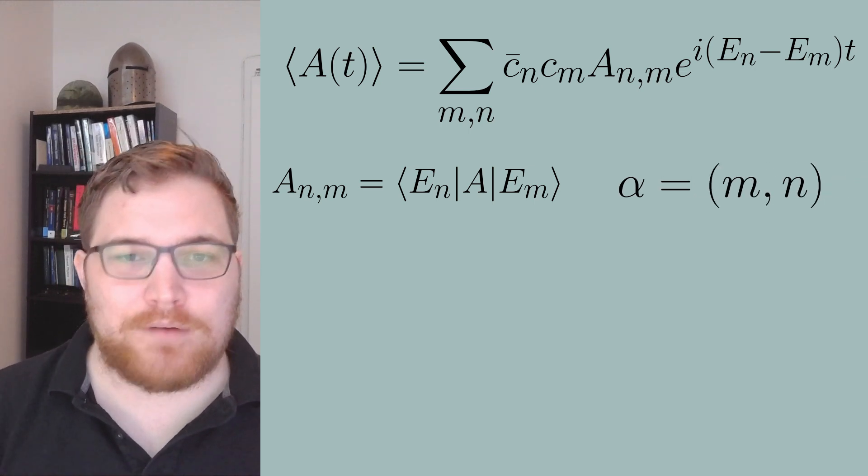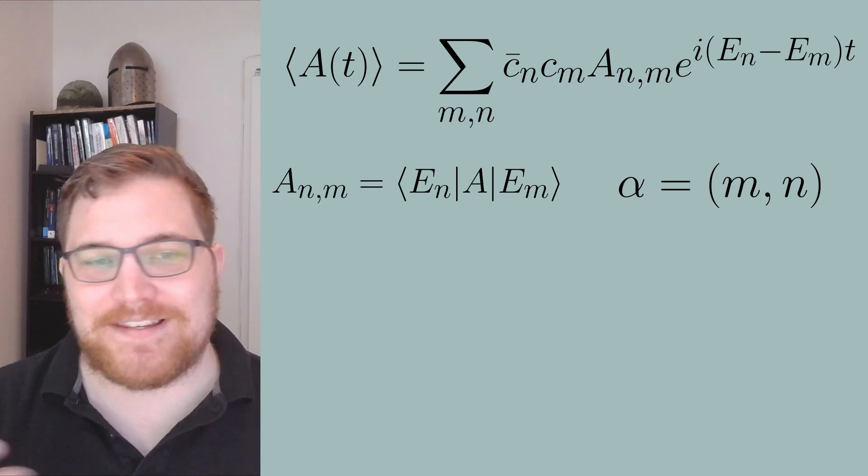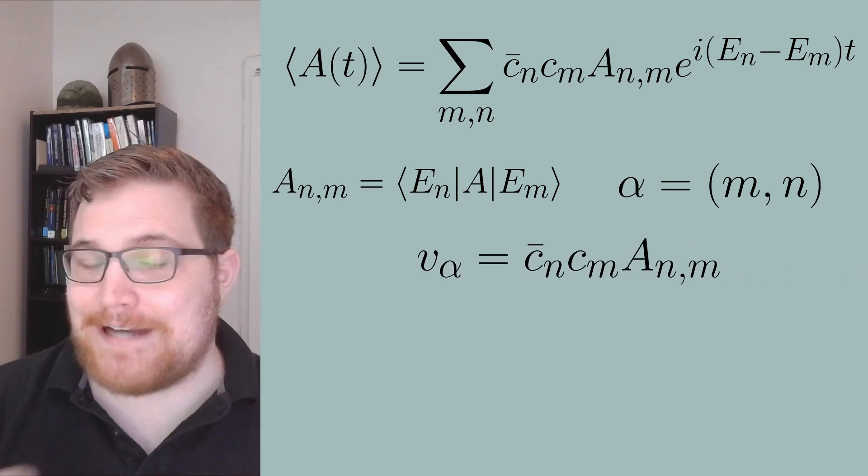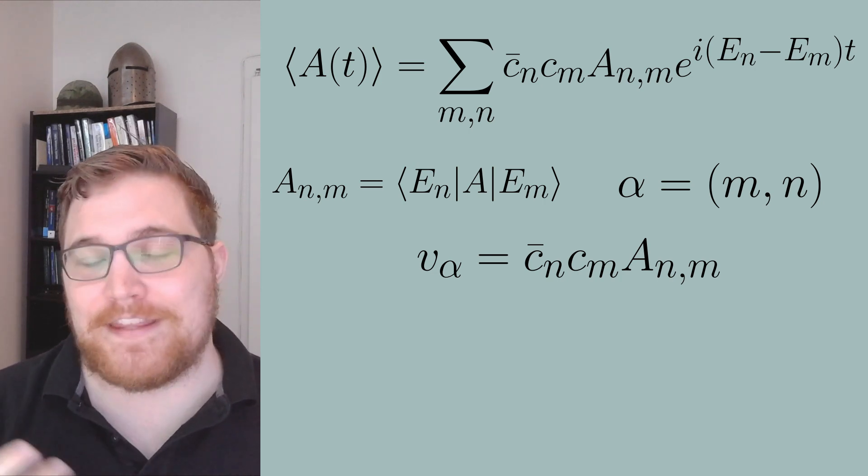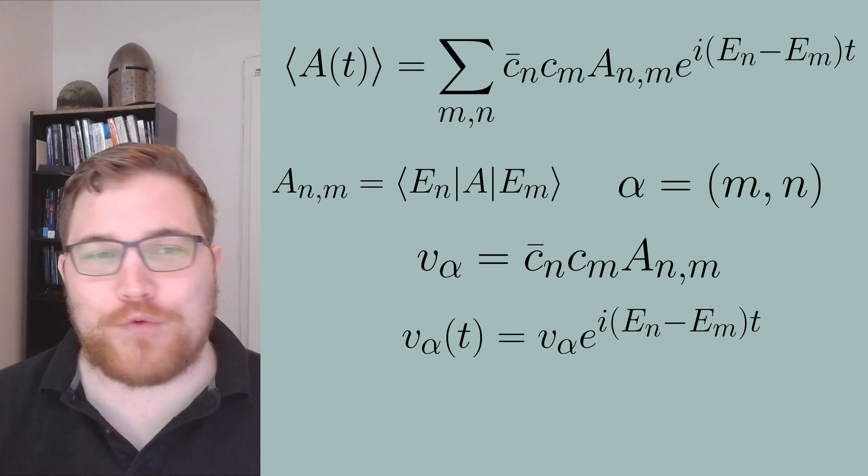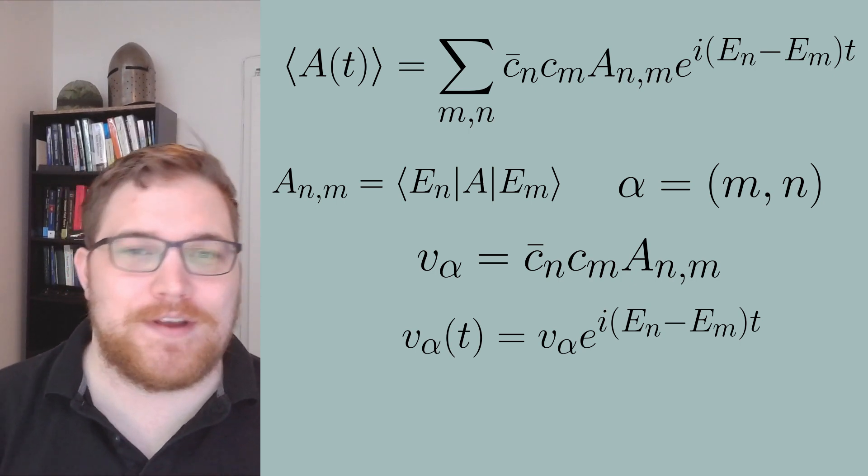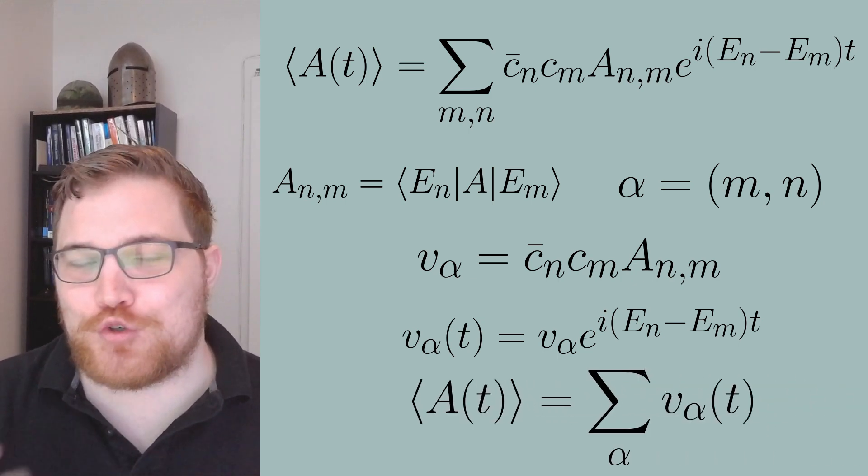This is just to make the notation a little bit shorter and easier to read. Now I'm going to pair each m and n term into a new parameter alpha and we will call the terms in the sum now v of alpha. And then we can further assign time dependency to our v of alpha terms like the following expression.